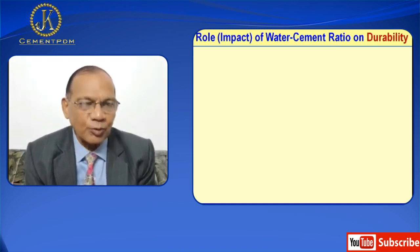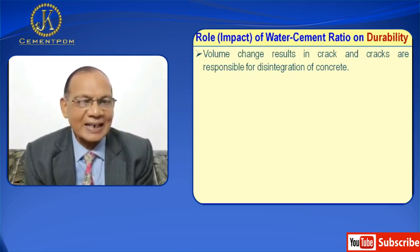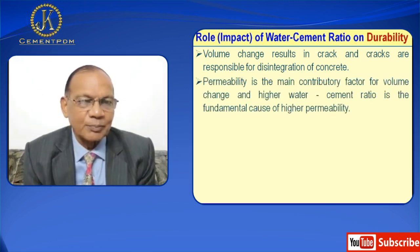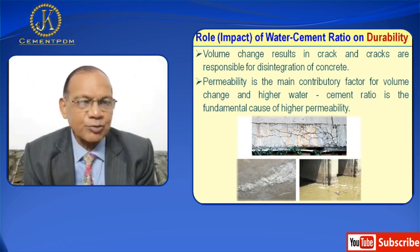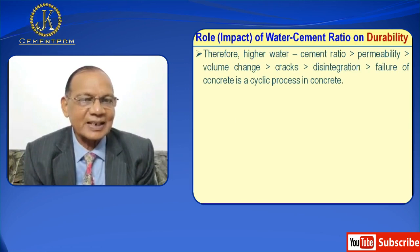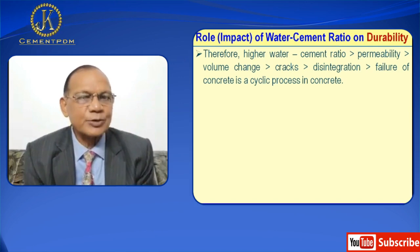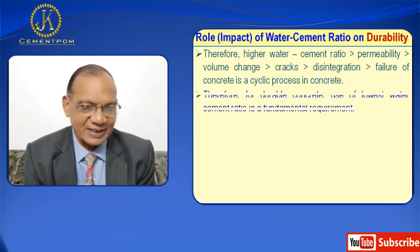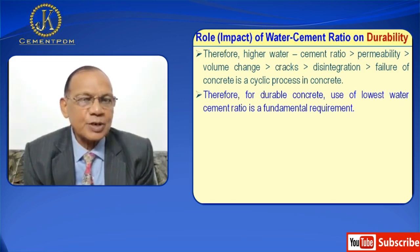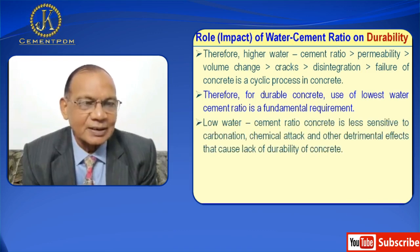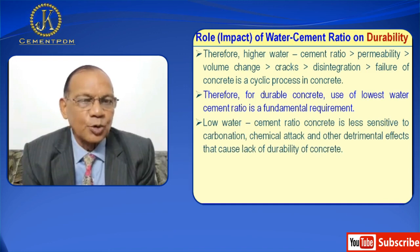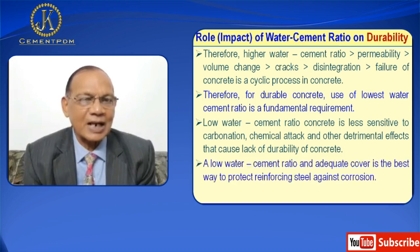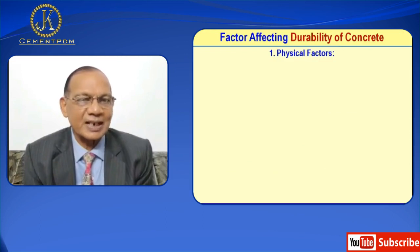Now I will discuss the role and impact of water-cement ratio. Volume change results in cracks and cracks are responsible for disintegration. Permeability is the main contributory factor for volume change, and higher water-cement ratio is the fundamental cause of higher permeability. Therefore, higher water-cement ratio leads to greater permeability, which leads to volume change, which leads to cracks, which leads to disintegration, and finally leads to failure of concrete — it is a cyclic process. Therefore, for durable concrete, use of the lowest water-cement ratio is a fundamental requirement. Low water-cement ratio makes concrete less sensitive to fire, chemical attack, and other detrimental effects. A low water-cement ratio and adequate cover is the best way to protect reinforcing steel.